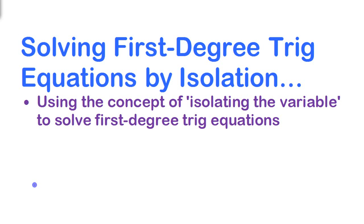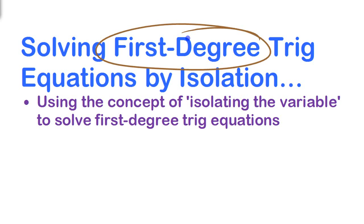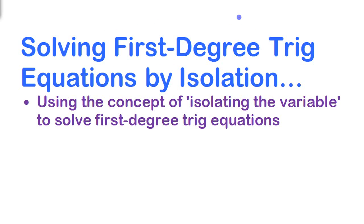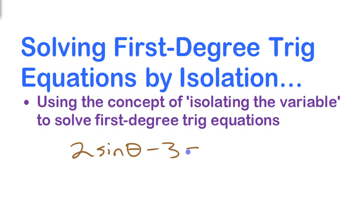We're going to look at solving trig equations now, and specifically we're going to look at solving first-degree trig equations. First-degree trig equations are equations that have trig functions in them, but not any powers of those trig functions higher than 1. For example, you might have an equation like 2 times sine of theta minus 3 equals 0. We're going to look at solving equations like that by techniques like isolating the variable.